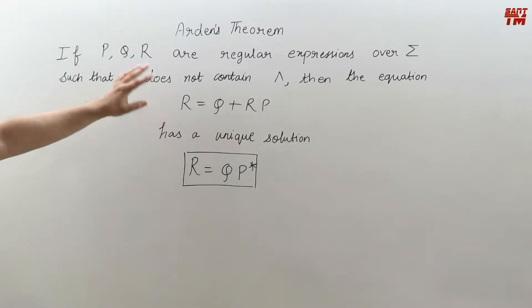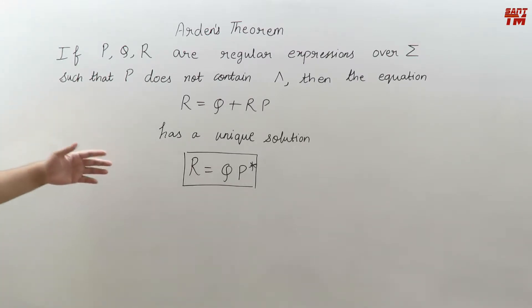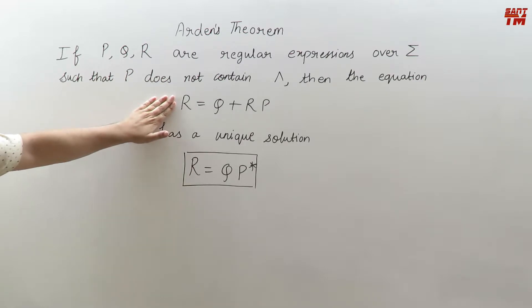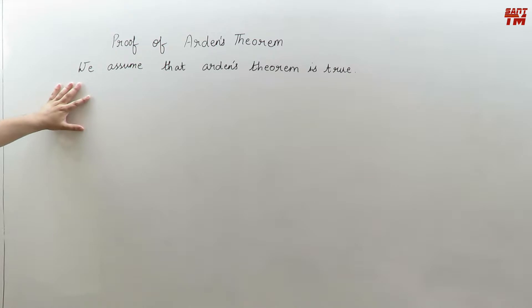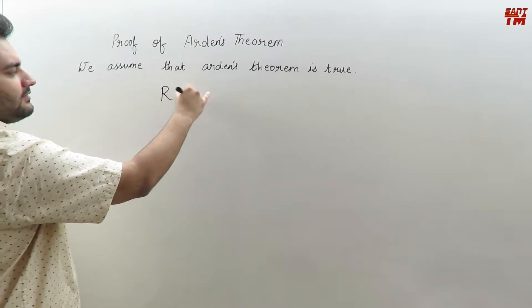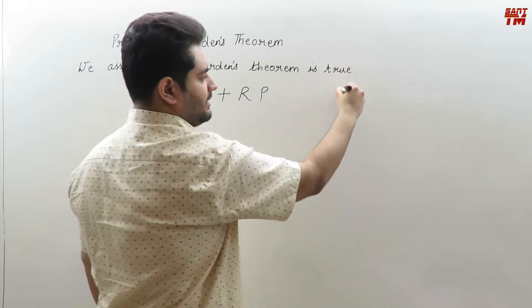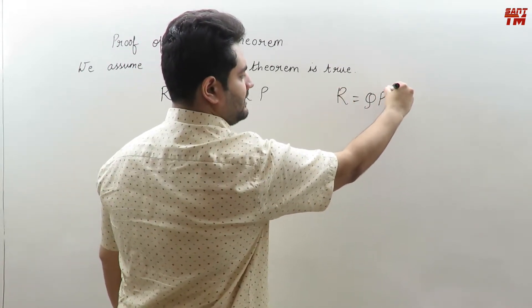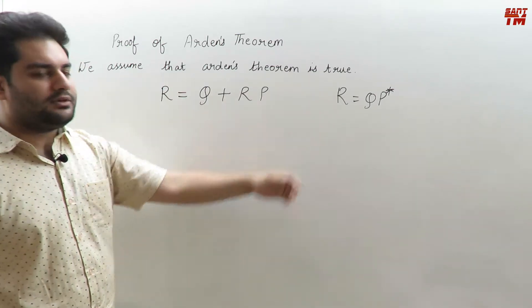Now we will discuss the proof of Arden's theorem — we will prove that this statement has a unique solution. We will proceed in two parts. In the first part, we will assume that Arden's theorem is true. If it is true, then the equation R equals Q plus RP has a unique solution R equals QP-closure.